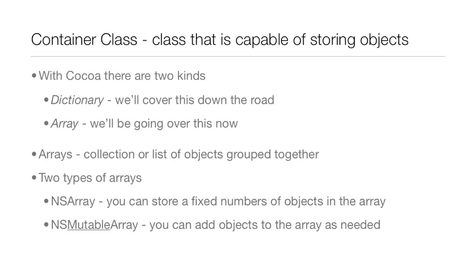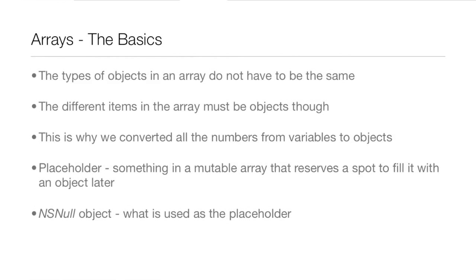Arrays are a collection or list of objects grouped together. There are two types of arrays: the first is NSArray, where you can store a fixed number of objects, and the second is NSMutableArray, which allows you to add objects as needed. It's easy to differentiate these because NSMutableArray has 'mutable' in it, meaning liable to change.